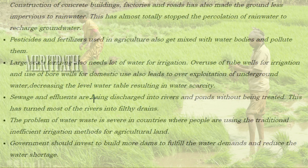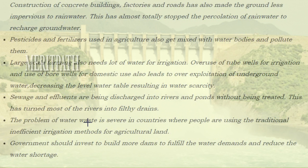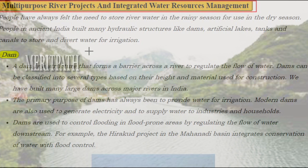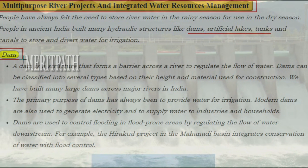The problem of water waste is severe in countries using traditional inefficient irrigation methods. Governments should invest in building more dams to fulfill water demand and reduce water shortage through multi-purpose river projects and integrated water resources management. People have always felt the need to store river water in the rainy season for use in the dry season. In ancient India, many hydraulic structures like dams, artificial lakes, tanks, and canals were built to store and divert water for irrigation.